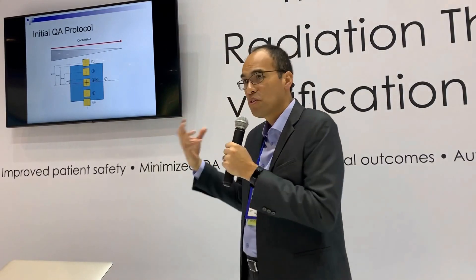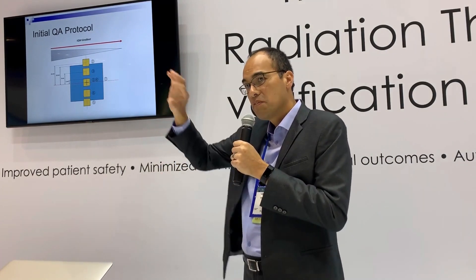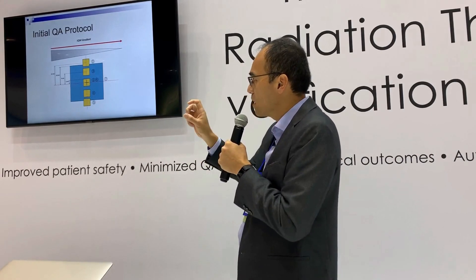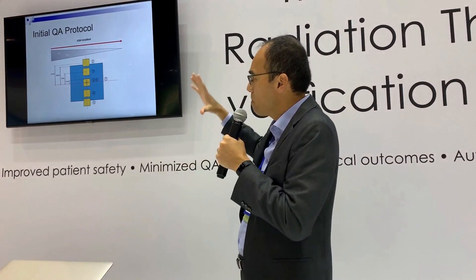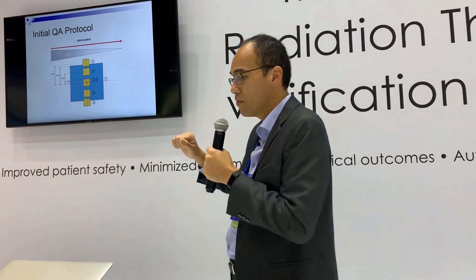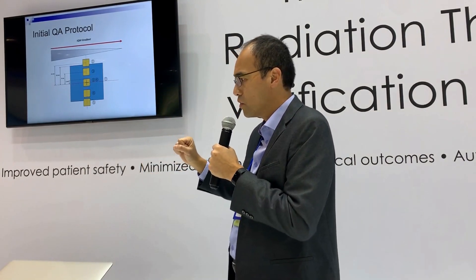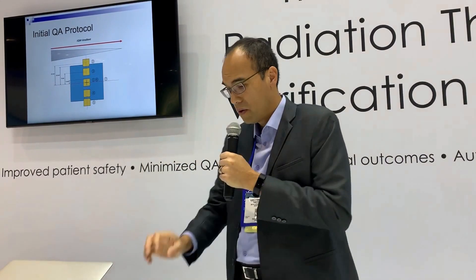We decided to do a progressive approach. We developed a protocol — a series of apertures in a specific order. We started with something in the center, then moved across, then went large, then small, in order to isolate different components. As you run it, it isolates different components and gives you information about each one, so when you go to the next step you know you've taken care of the previous one. The first things we wanted to address were output, symmetry, the position of the jaws, and the position of some of the MLCs.